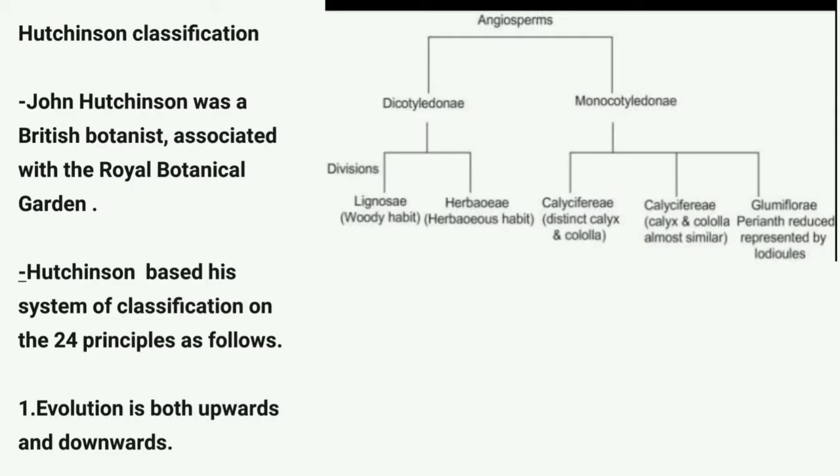In this video we are going to learn about the Hutchinson classification. Hutchinson classification was proposed by T. John Hutchinson, a British botanist associated with the Royal Botanical Garden.